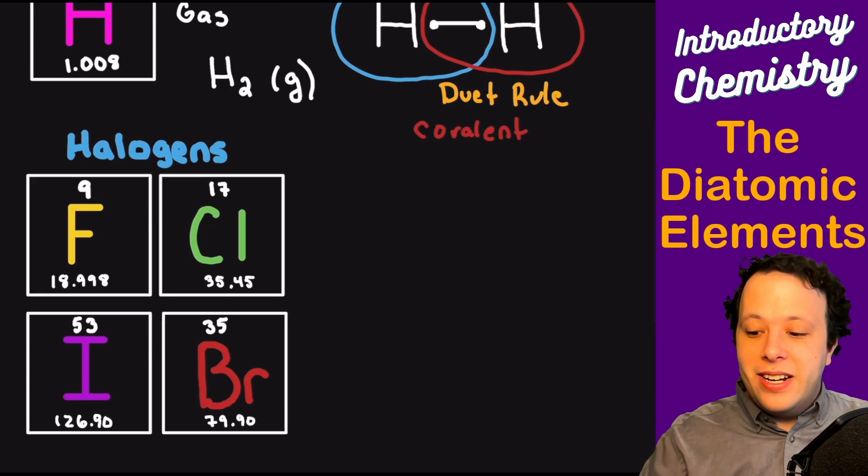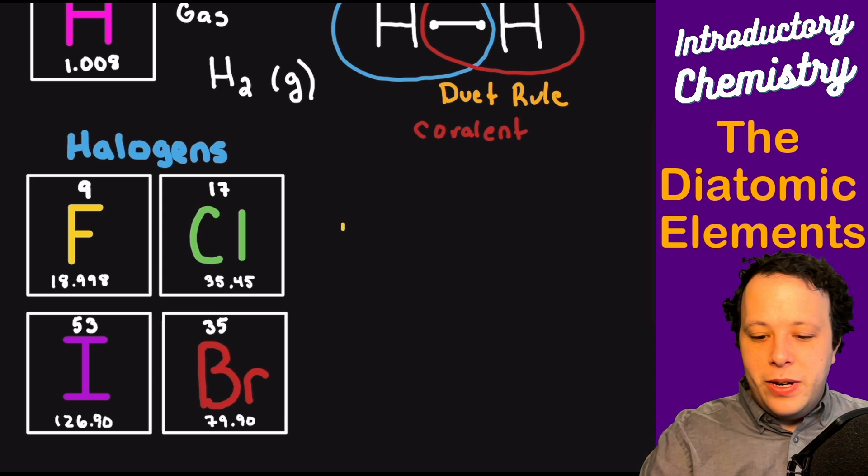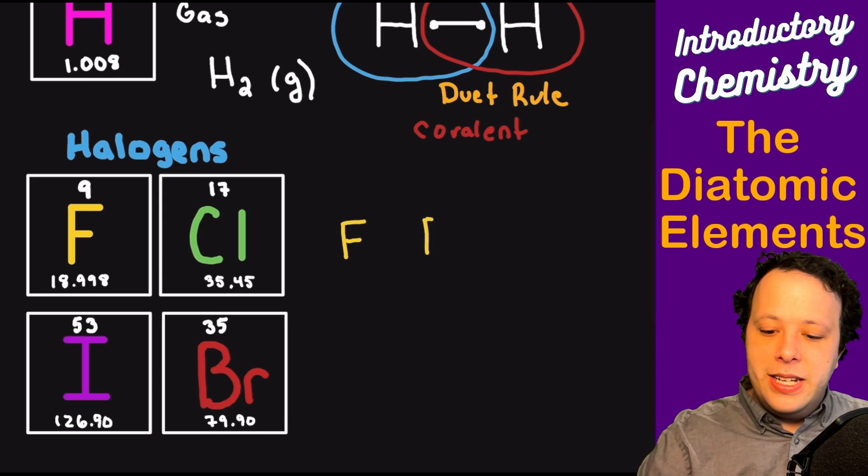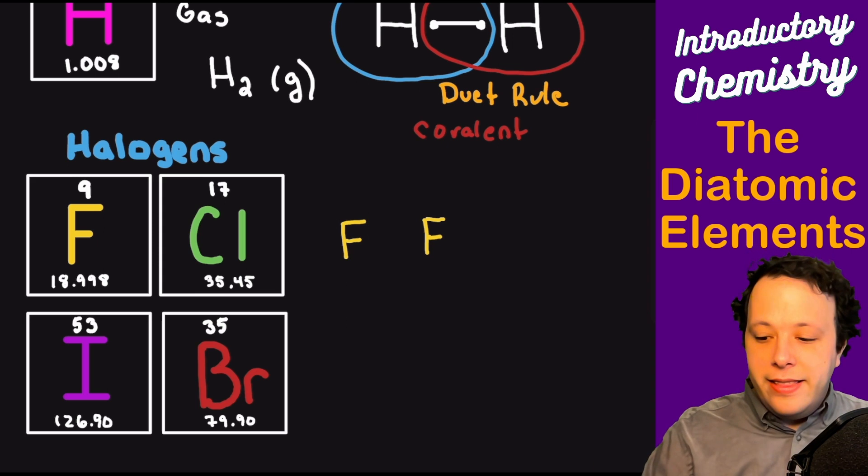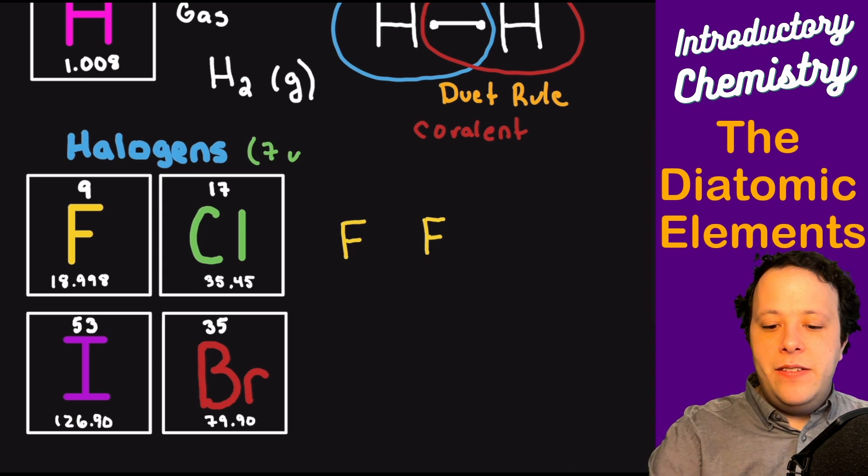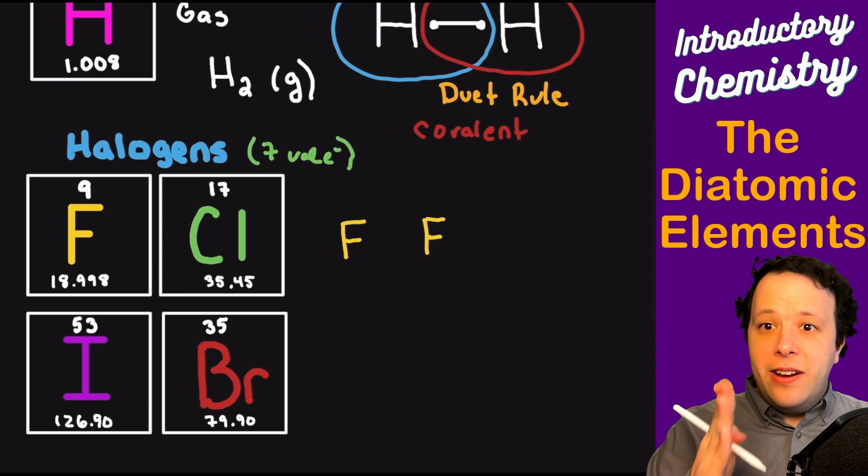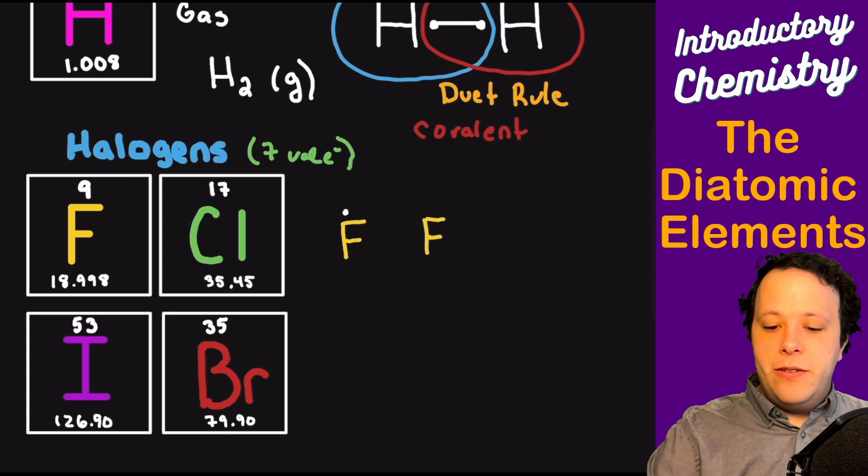Now there are other elements. If I want to start with the first one, which is fluorine, we can think: how many valence electrons does any of the halogens have? Well, all of them have seven valence electrons around them, and that's from counting the columns of the periodic table.